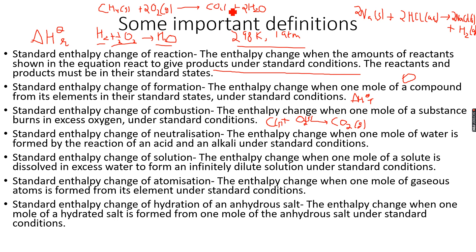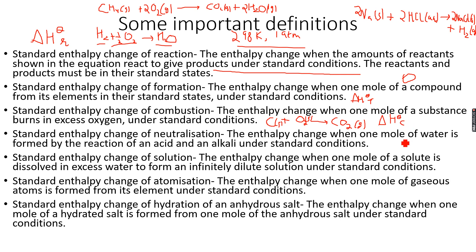So this will be the standard enthalpy change of combustion of methane gas. In the example of carbon forming CO₂, that will be both the standard enthalpy change of combustion of carbon and the standard enthalpy change of formation of CO₂ because it fits both definitions. But in the case of CH₄, it will be only one of them. This is denoted by ΔH°c.